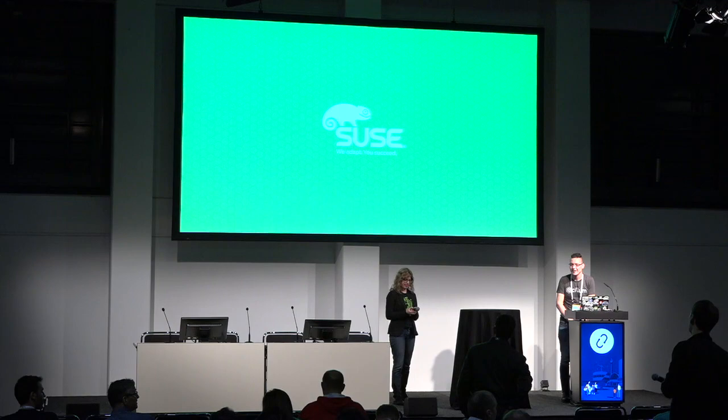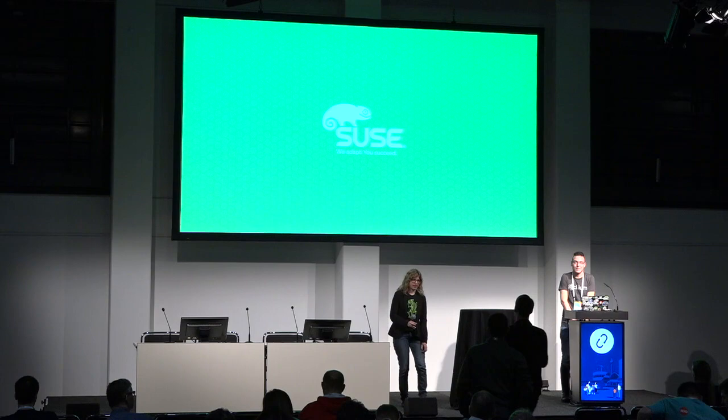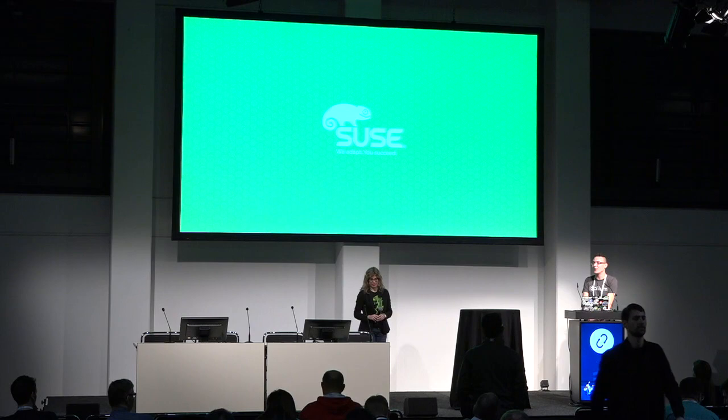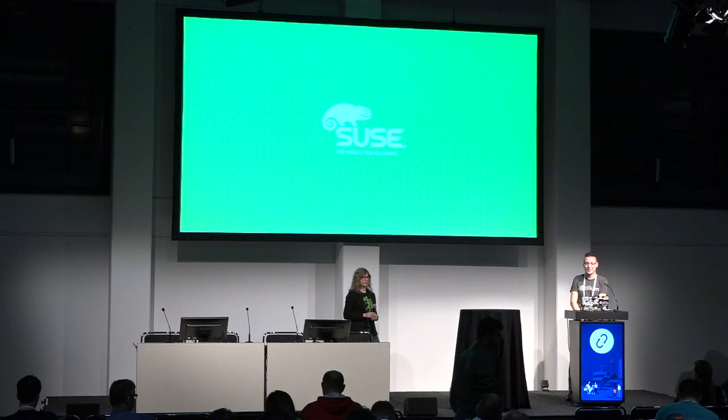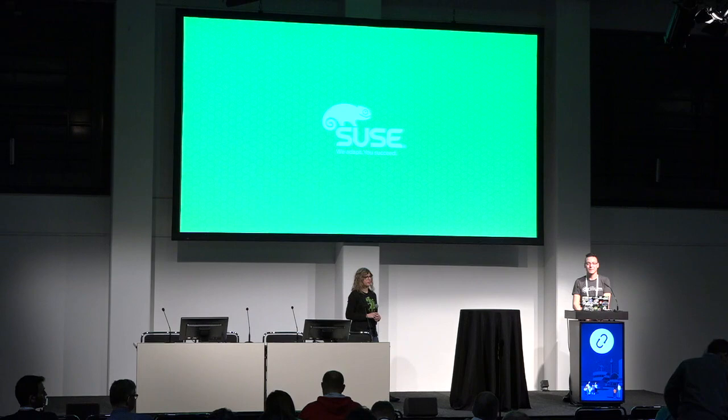Final question: Can we use other Neutron plugins along with Cilium as a layer 7 policy? In the experiment only the OVS plugin was used, but when implementing upstream the goal is to try to support everything that Kuryr supports. That experiment was OVS only. Thank you again for listening to the presentation.